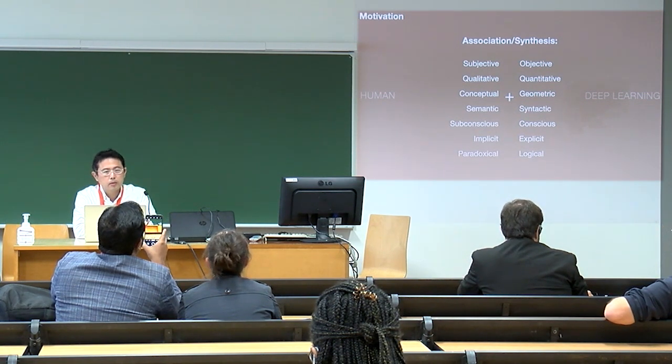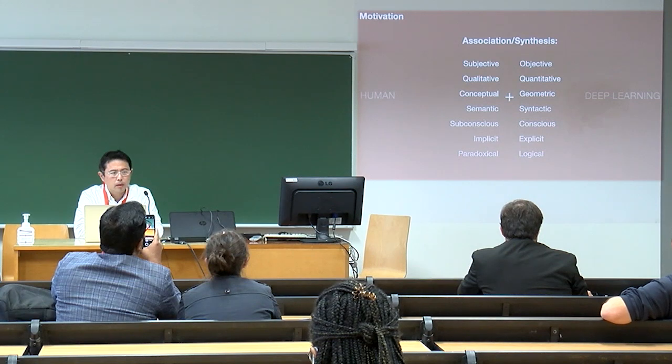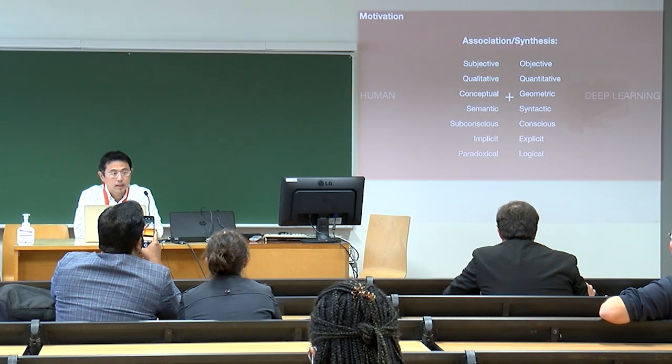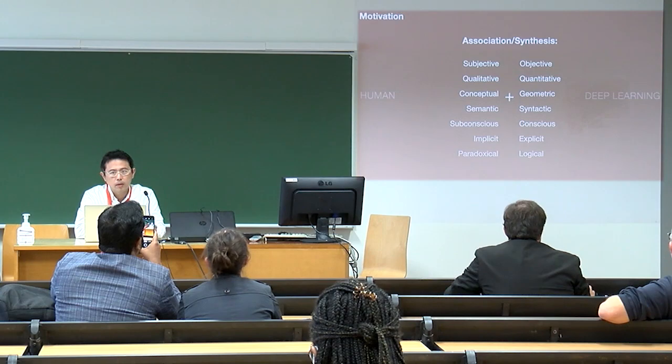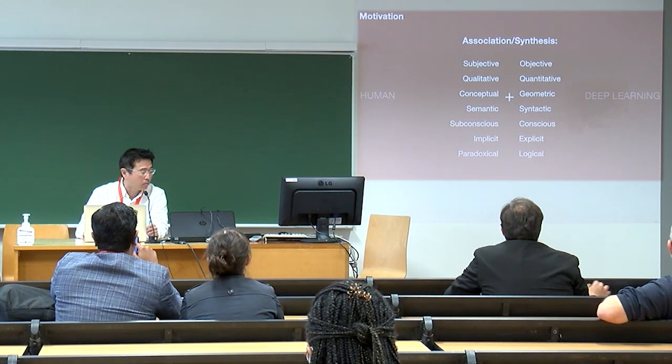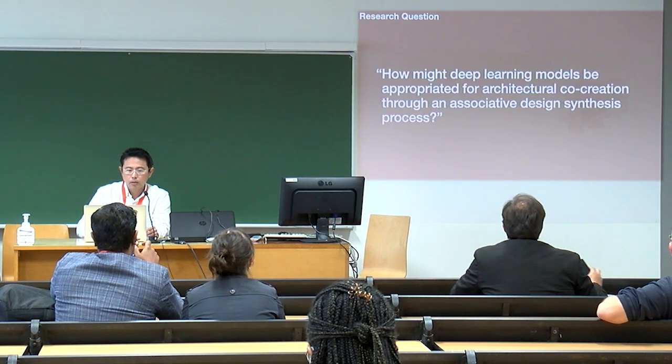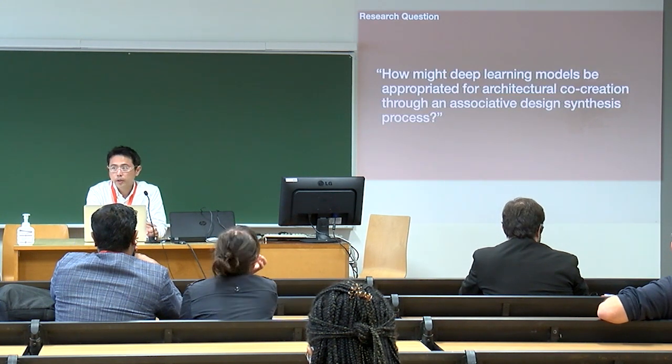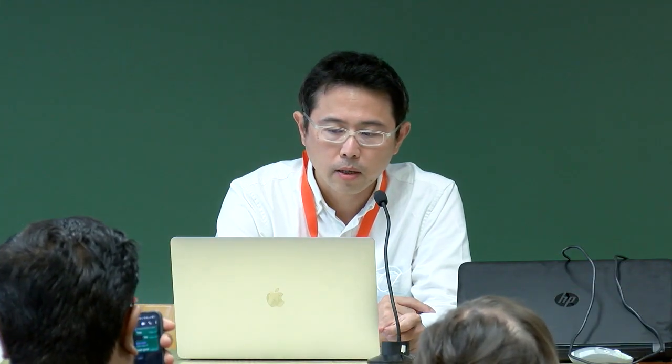The intention of the paper is to combine these two strands of understanding and observe how they may interplay in terms of their associative affordance for design. On the one hand you have the human part, and the deep learning part. The research question is: how might deep learning models be appropriated for architectural co-creation through an associative design synthesis process?